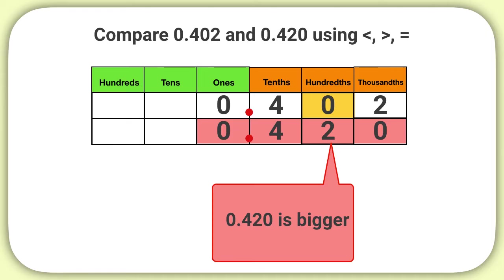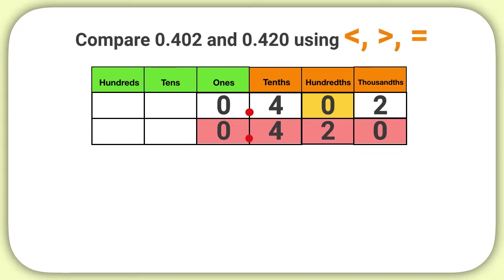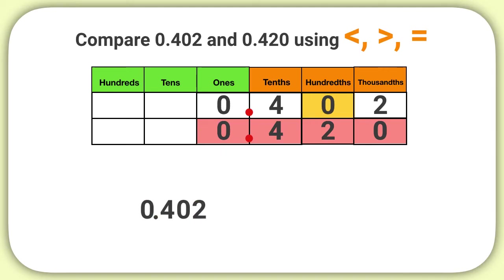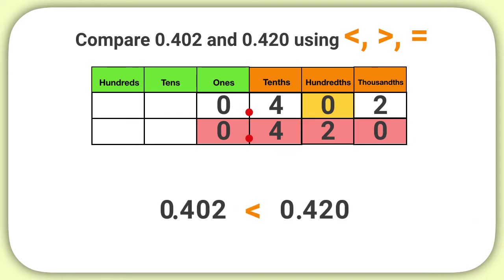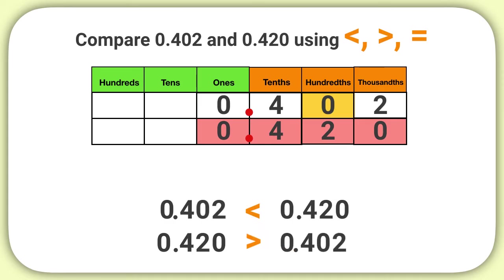When I look back at my problem, I see that I need to compare these numbers with the less than, greater than, or equal to symbol. Since 402 thousandths is less than 420 thousandths, I will place the less than symbol between the two numbers. I could also rewrite this using the greater than symbol by writing 420 thousandths is greater than 402 thousandths.